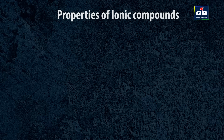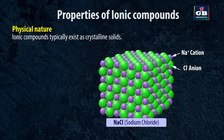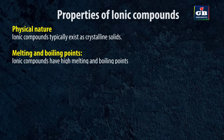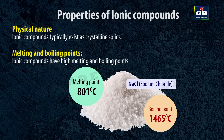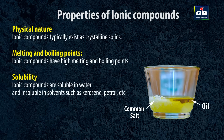Properties of ionic compounds. Physical nature: ionic compounds typically exist as crystalline solids. They are hard since the anions and cations in them are held together by strong electrostatic forces. Melting and boiling point: ionic compounds have high melting and boiling points. For example, the melting point of sodium chloride is 801 degrees Celsius and the boiling point is 1465 degrees Celsius. Solubility: ionic compounds are soluble in water and insoluble in solvents like kerosene and petrol. For example, sodium chloride dissolves in water but not in petrol and kerosene.